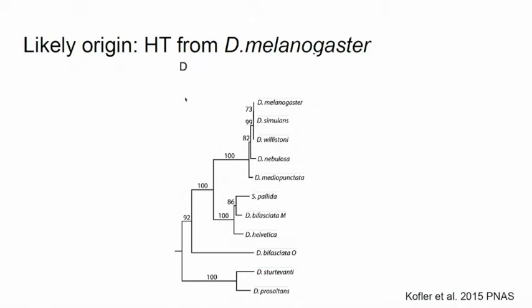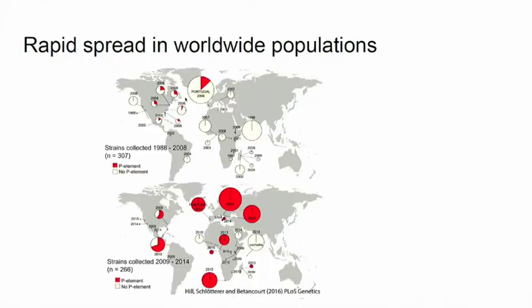The question is: where did it come from? Why does simulans suddenly have it? We speculate it's horizontal transfer from Drosophila melanogaster, because the sequence is very similar — there is just one SNP difference at position 2040. So it's almost the same sequence. It must have been horizontally transferred from melanogaster. Maybe via a mite, maybe Wolbachia — we have absolutely no idea. But once it entered simulans, it rapidly spread in worldwide populations.